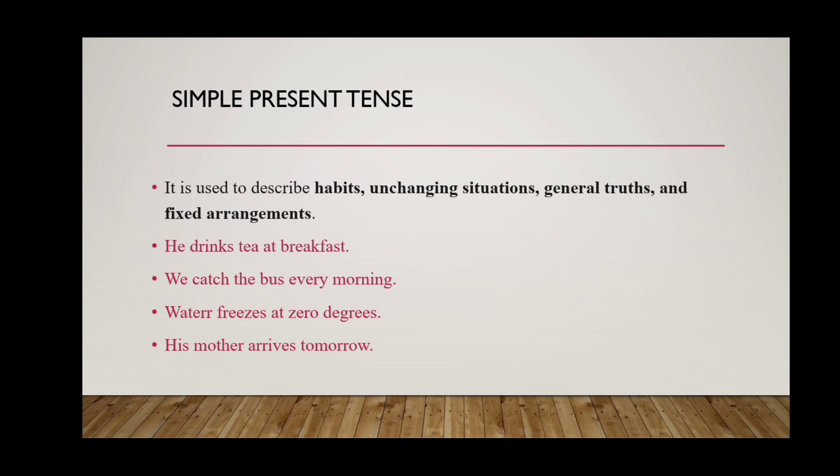'His mother arrives tomorrow.' Now, as I told you, if the subject is third person singular number, s or es is added to the verb. In the first sentence and the last sentence, the subject is 'he' or 'his mother,' which is third person singular number. So here we have added s with the verb. That was simple present tense.